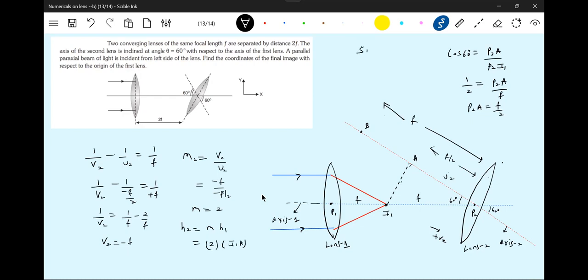What is I1A? Sin 60 is equal to I1A by P2I1. This triangle. You have to look at this triangle. This will be root 3 by 2. I1A is what? We need it. P2I1 is what? F. So I1A equal to root 3F by 2.